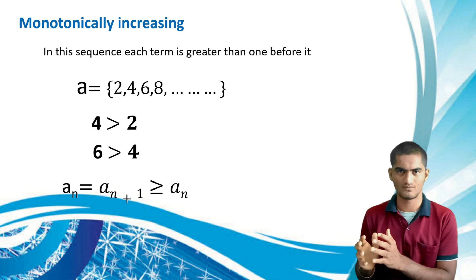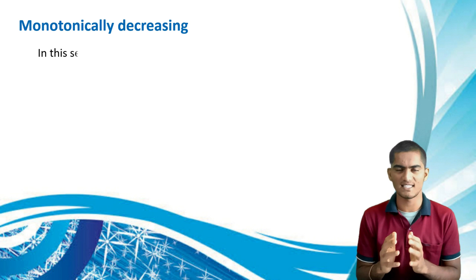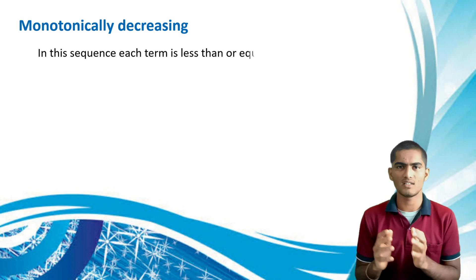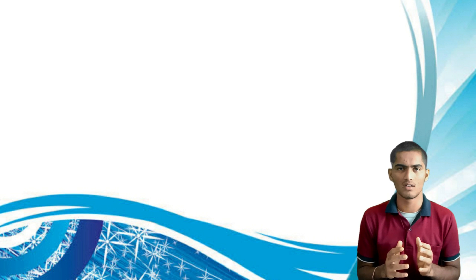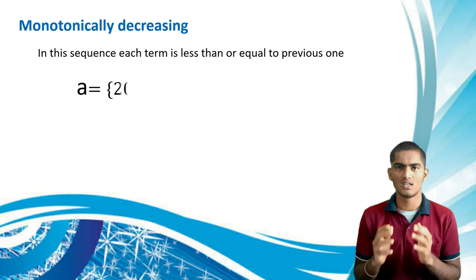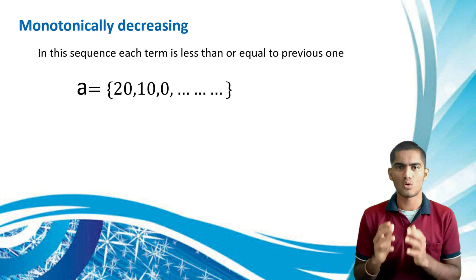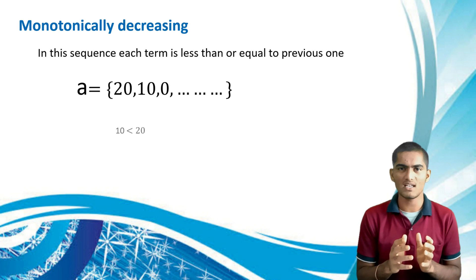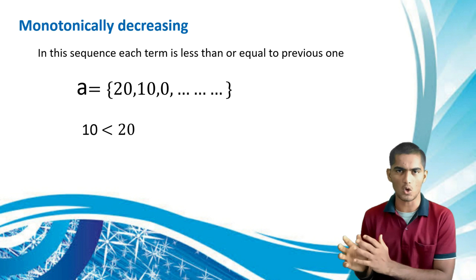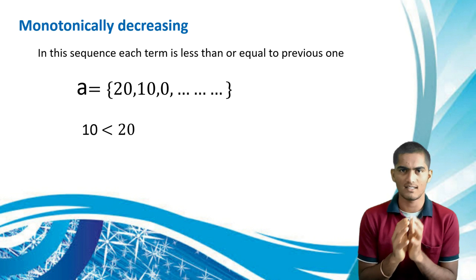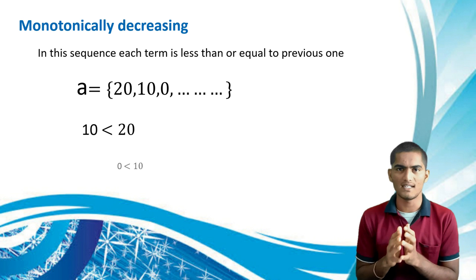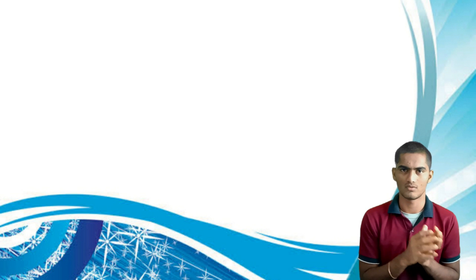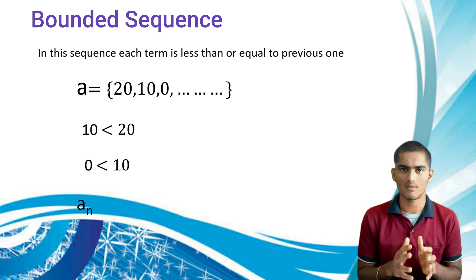The second type is monotonically decreasing: each consecutive term is less than or equal to the previous one. For example, the sequence 20, 10, 0: the second term 10 is less than the first term 20, and the third term 0 is less than 10. The general form is a_(n+1) ≤ a_n.